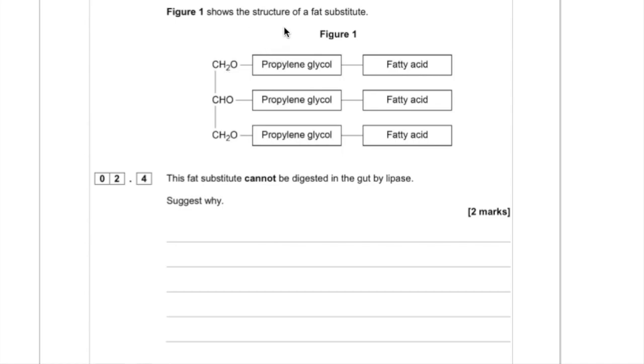In the next part, we've been given a figure showing the structure of a fat substitute. This fat substitute cannot be digested in the gut by lipase. Suggest why? Let's analyze the question a little bit. What do we know about lipase? Lipase is an enzyme. It would normally digest lipids. Whereas they've given us a fat substitute here. So it's going to be like a lipid. We can see that it's got fatty acids, but what's this? Propylene glycol, and it's just slightly different. So why can this fat substitute not be digested in the gut by lipase? In order to get the marks for this question, you need to identify what topic are they testing your knowledge of.